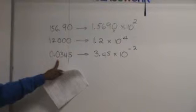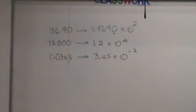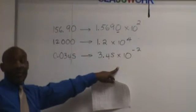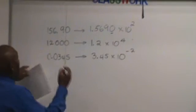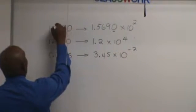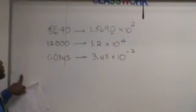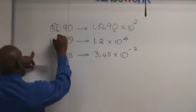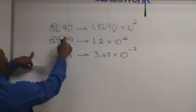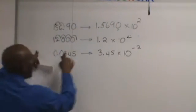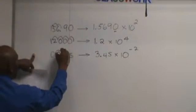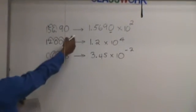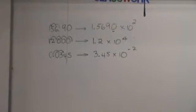These zeros are not significant. Why is this positive and this negative? With this one, we're going this way — two decimal places. With this one, you went from here to there, to there, to there, to there — one, two, three, four places. With this one, you went from there to there. So in this case you went to the right, in this case you went to the left.